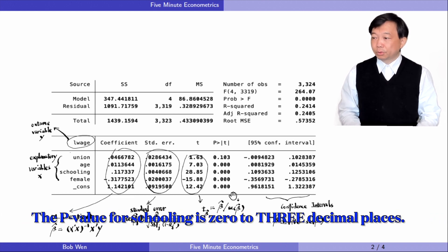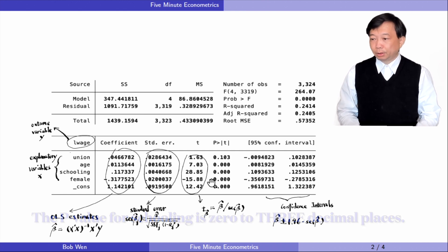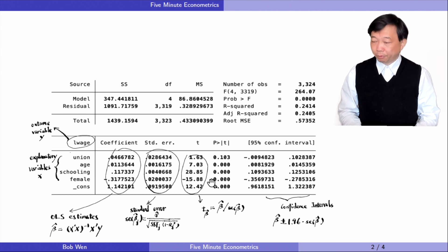It implies that schooling is statistically significant at any traditional level. By contrast, the p-value for union is above 0.1, which means the null hypothesis is not rejected at even the 10% significance level. The union membership is statistically insignificant at the 10% level after controlling for the other variables.